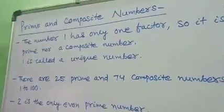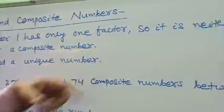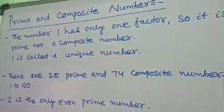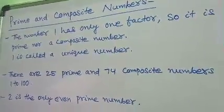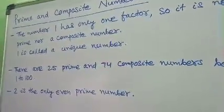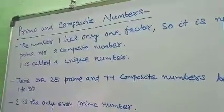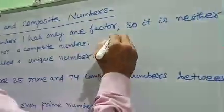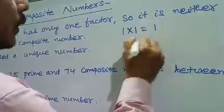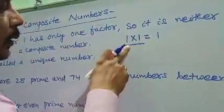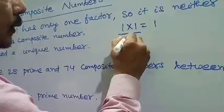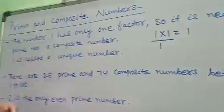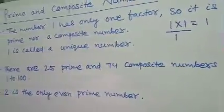Now, the number one has only one factor. So it is neither prime nor a composite number. For two factors the number is prime, and for more than two factors the numbers are composite. But the number one has only one factor — one times one equals one — so the factor of one is just one. Therefore, one is neither prime nor a composite number.